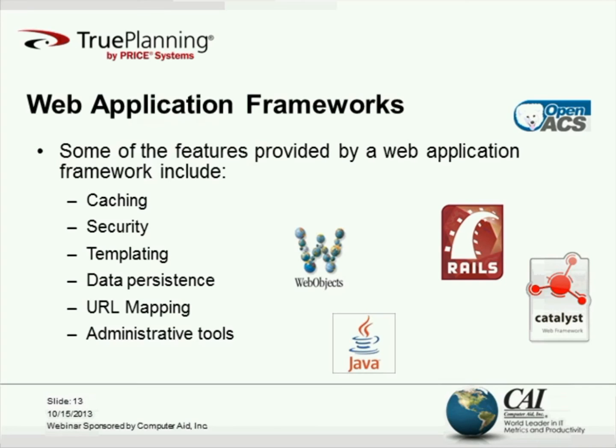Web application frameworks are basically like an SDK — a software development kit — for web application development. They represent the next generation of web languages, adding capabilities that most web developers would need. There are a bunch of different web application development tools out there, including Catalyst, Ruby on Rails, and WebObjects. These are all different frameworks that a web developer could use to ease the development of their web applications.